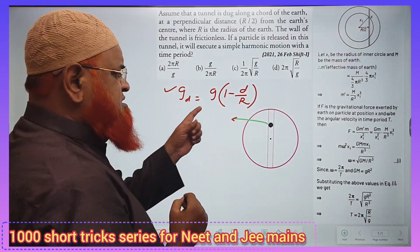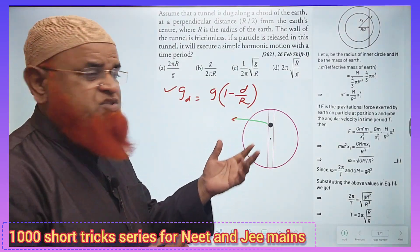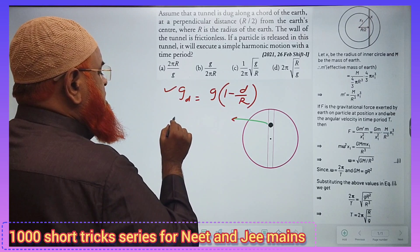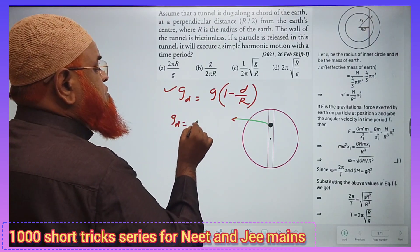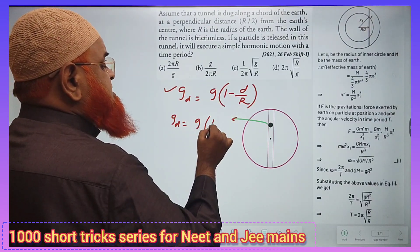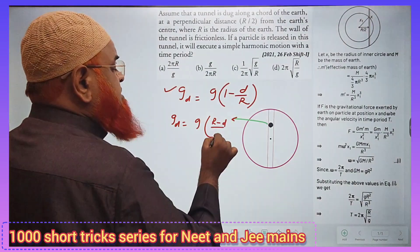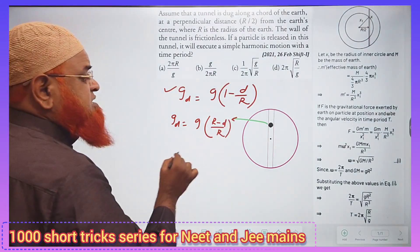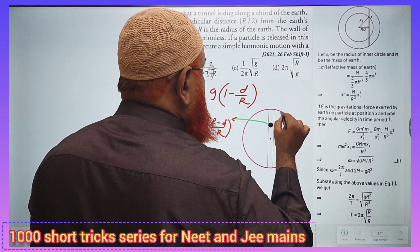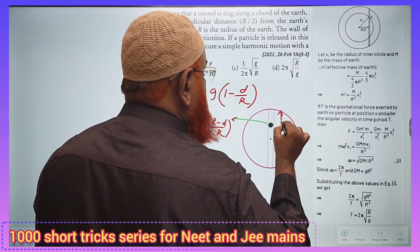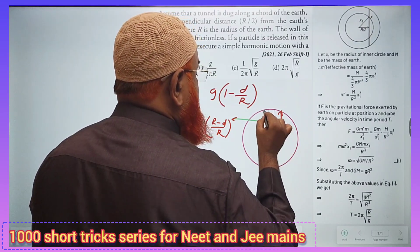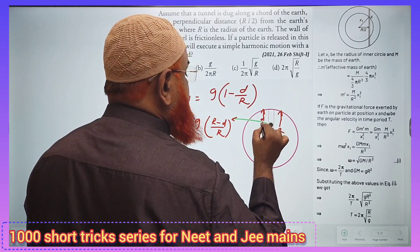You all know g at certain depth is nothing but g times (1 - D/R). So g at certain depth can be taken as g times (R - D)/R. You can consider what is this now? This is going to be the radius R, and this is going to be the depth D.